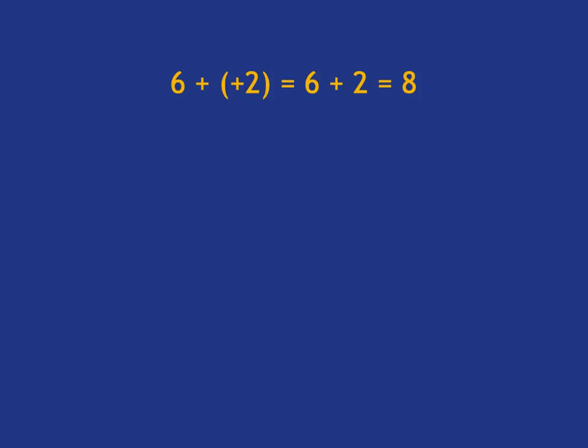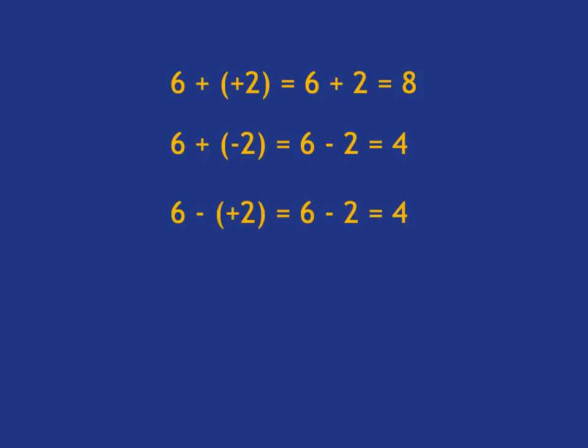To summarize: if we are adding a positive, we are adding heat — we go up — it's just the same as adding. If we are adding a negative, we are adding cold — we go down — it's the same as subtracting. If we are subtracting a positive, we are taking out heat — we go down — it's the same as subtracting. And if we are subtracting a negative, we are taking out cold — we go up — so it's the same as adding.